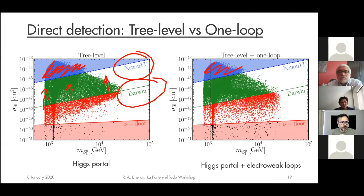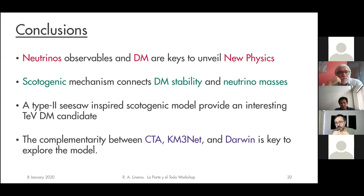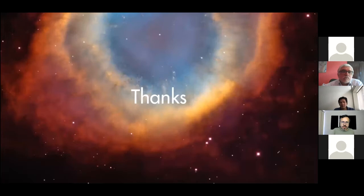To conclude, neutrino observables and dark matter observables are complementary ways to look for new physics. The scotogenic seesaw mechanism elegantly connects the two sides — neutrinos and dark matter. Experiments are going to tell us whether a scotogenic model is a good direction for extending the standard model, and the complementarity between CTA, KM3Net, and Darwin will be key. Thank you very much. I'm happy to take questions.